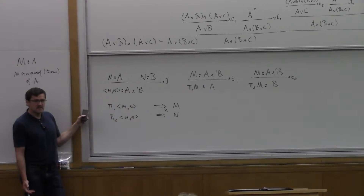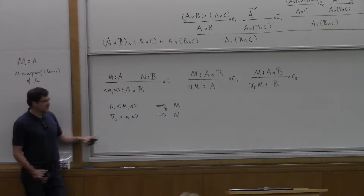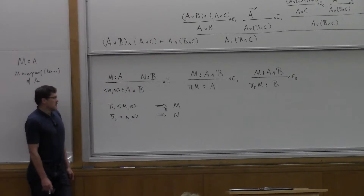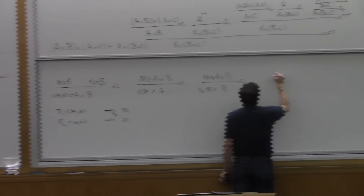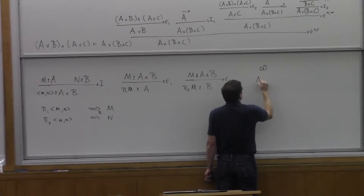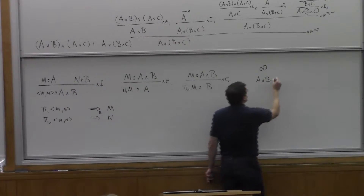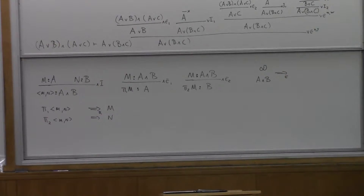So the local reduction we use to witness the soundness of the rules is actually a computation rule: taking the first or second component of the pair. What was our local expansion? If you have a proof D of A and B, we expand it into the pair consisting of the first projection and the second projection.